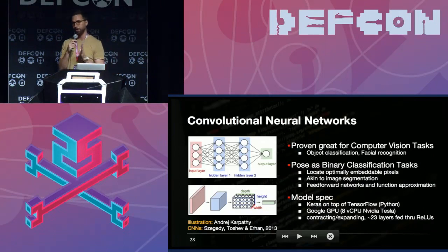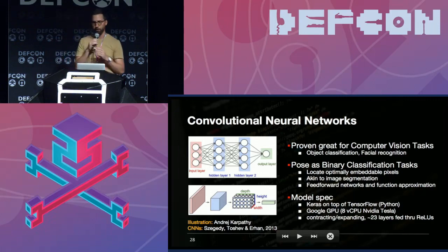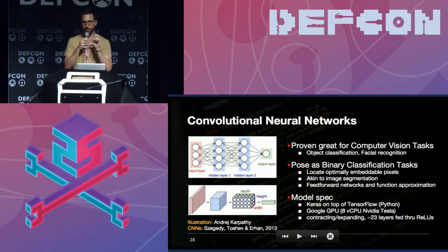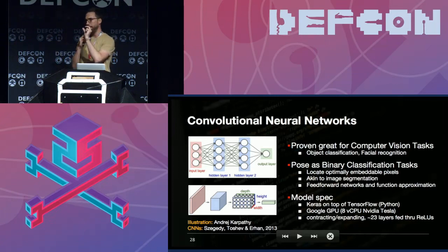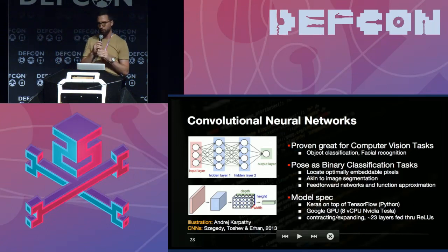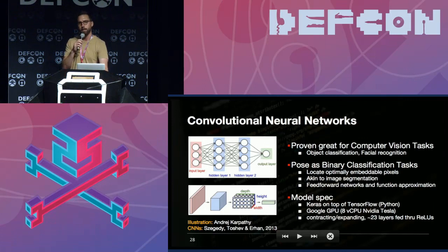Convolutional neural networks work somewhat like the human visual system — taking convolutions or filters over each layer, with each layer responding selectively to activations in the previous layer. This has been proven really effective for computer vision tasks like object classification and facial recognition. A lot of big companies are using this at scale and selling it as products. For our purposes, we want to pose this as a binary classification task for each individual pixel: given an unseen image, is this pixel likely to change when I upload it to the social network and download it?